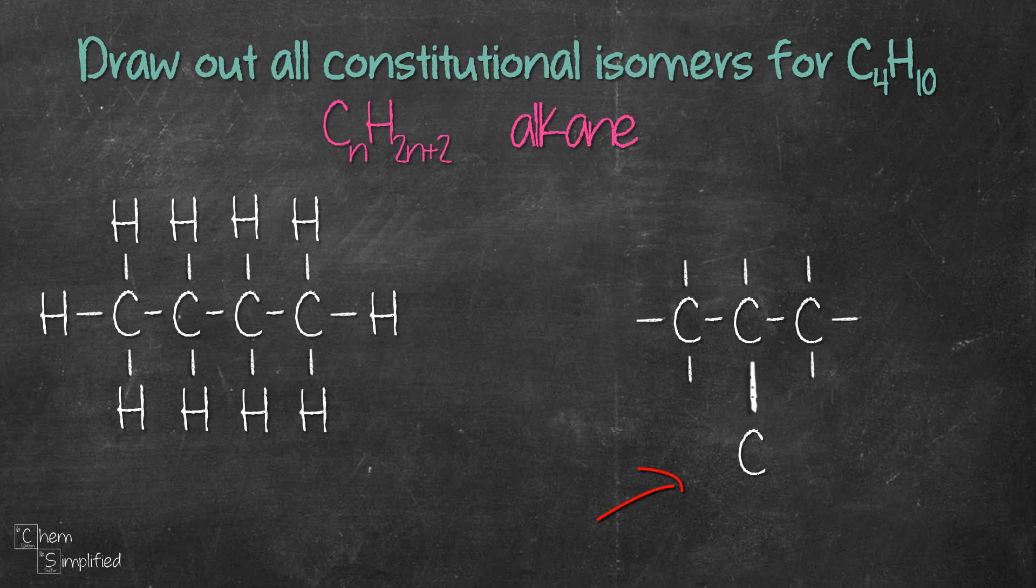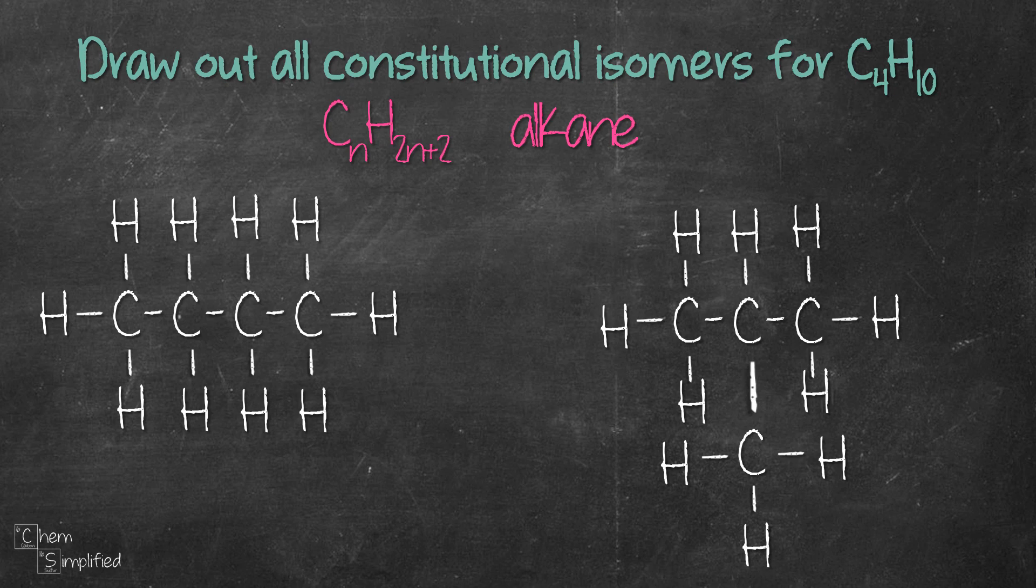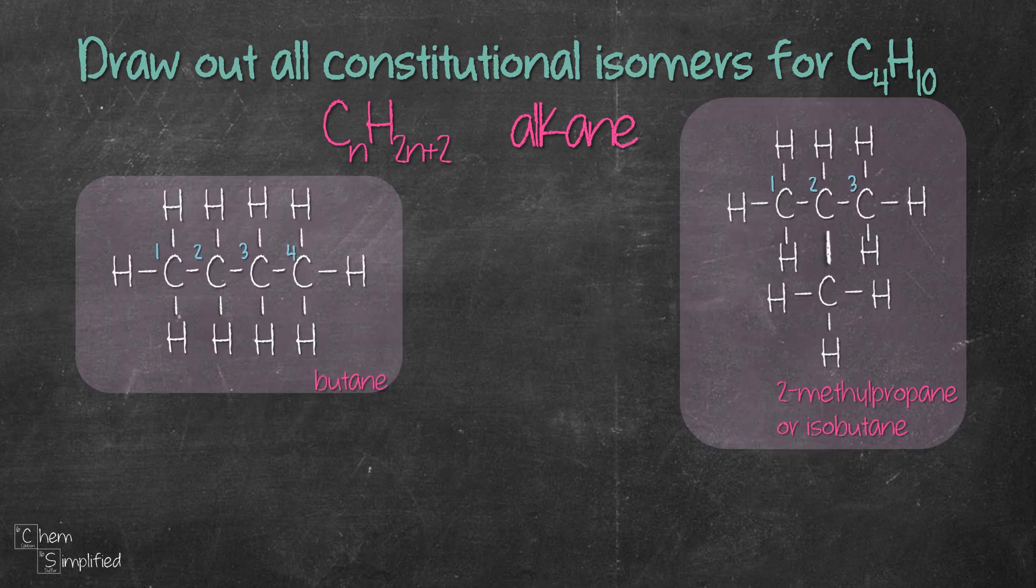And this substituent, the carbon hanging there, it's also connected to one carbon, so that means it has three remaining bonds as well. Now we fill in with hydrogens and we have our second and final structure for C4H10.